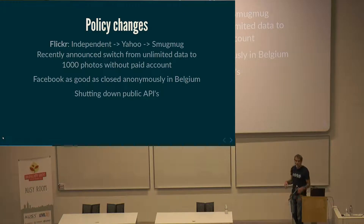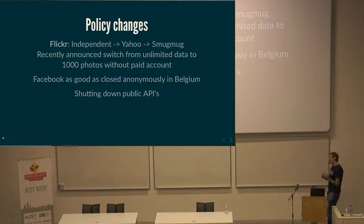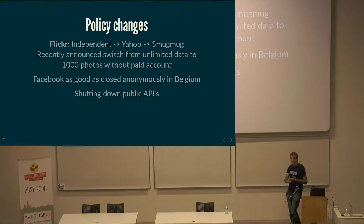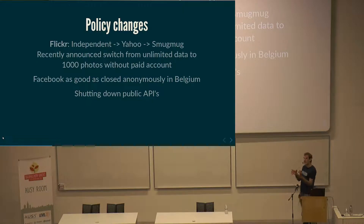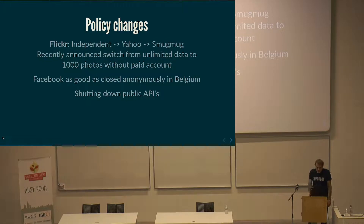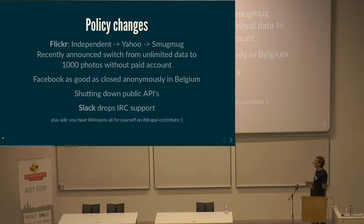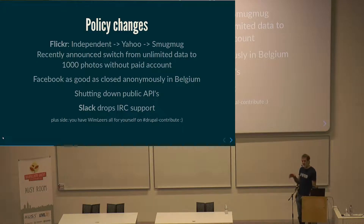They're also shooting down public APIs. This is typical with all these services — in the beginning, they give you public APIs so as a developer you can create third-party applications. Facebook and Instagram are very good examples. We had to tell our clients they won't be able to publish posts from their website to Facebook through the API anymore. My personal favorite is Slack dropping IRC support at some point, so it's very quiet in the Drupal contribute channels right now.